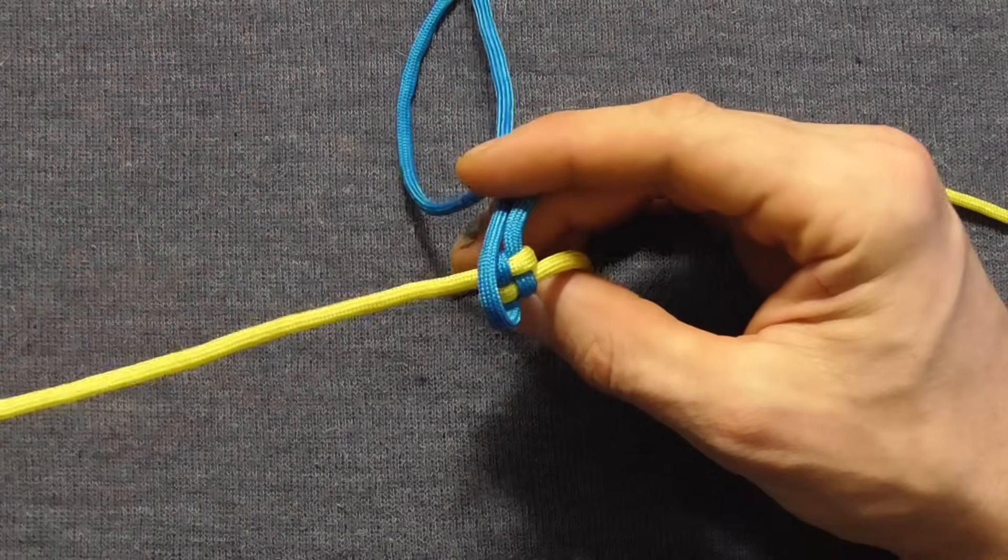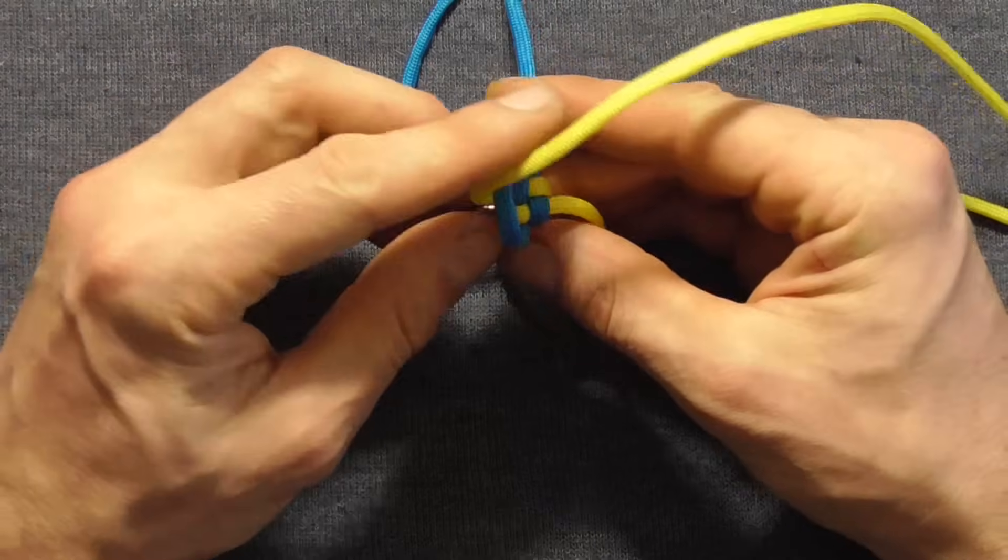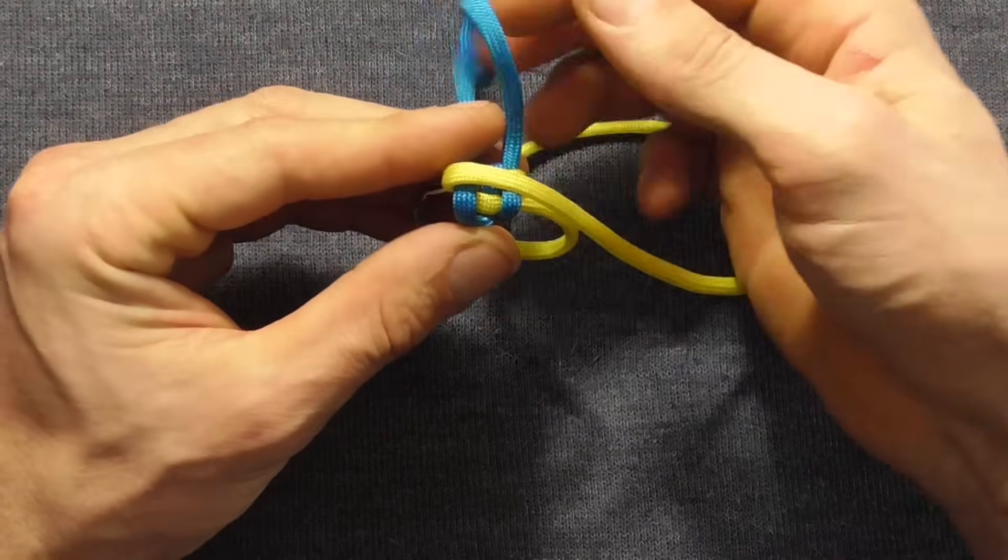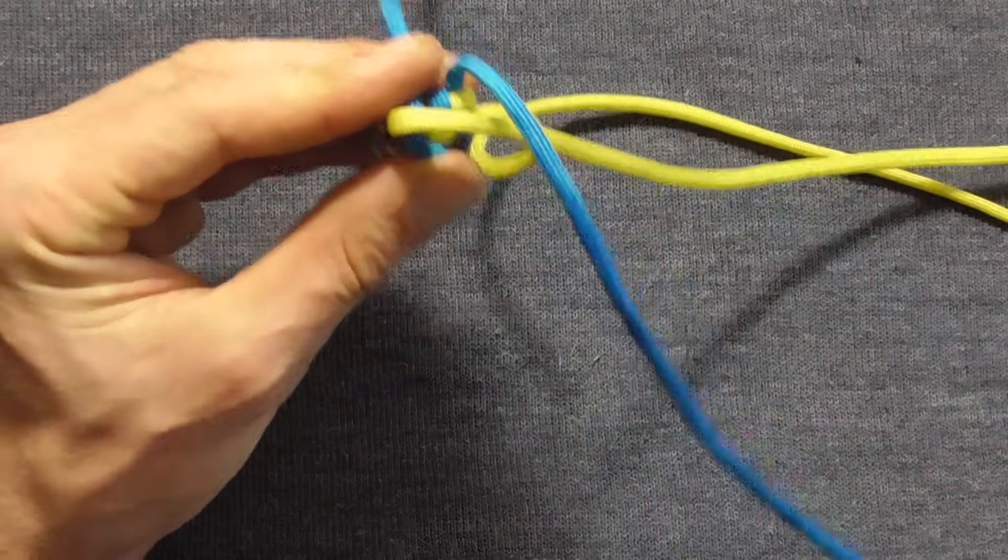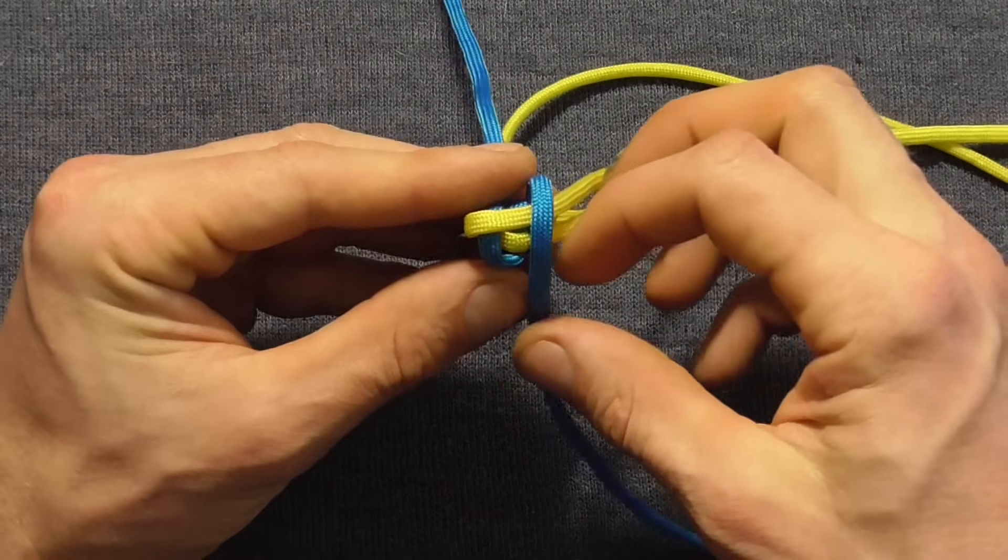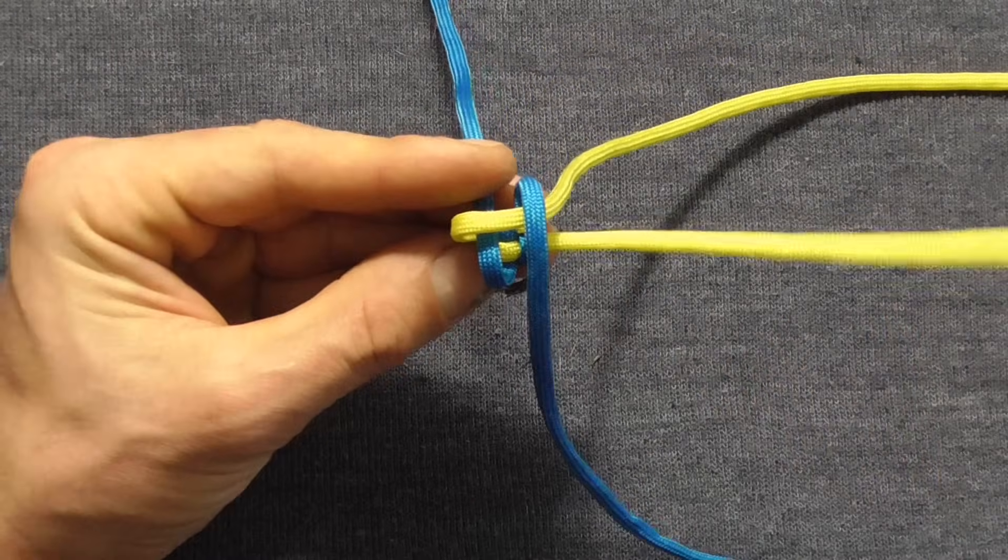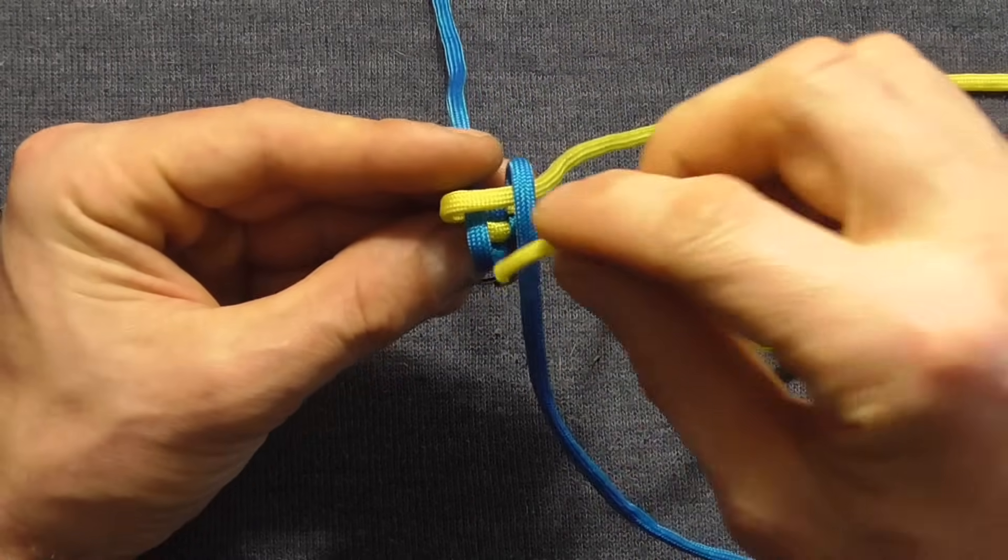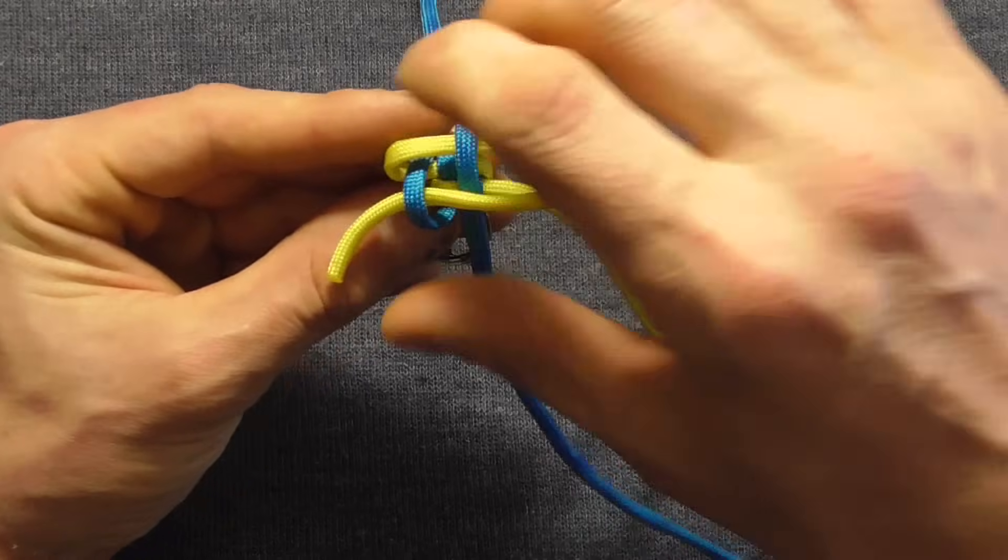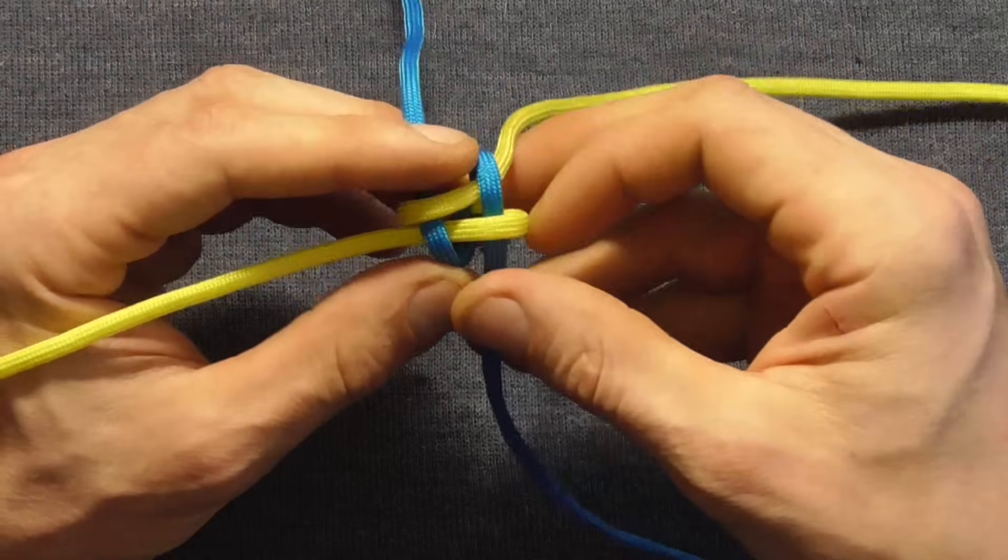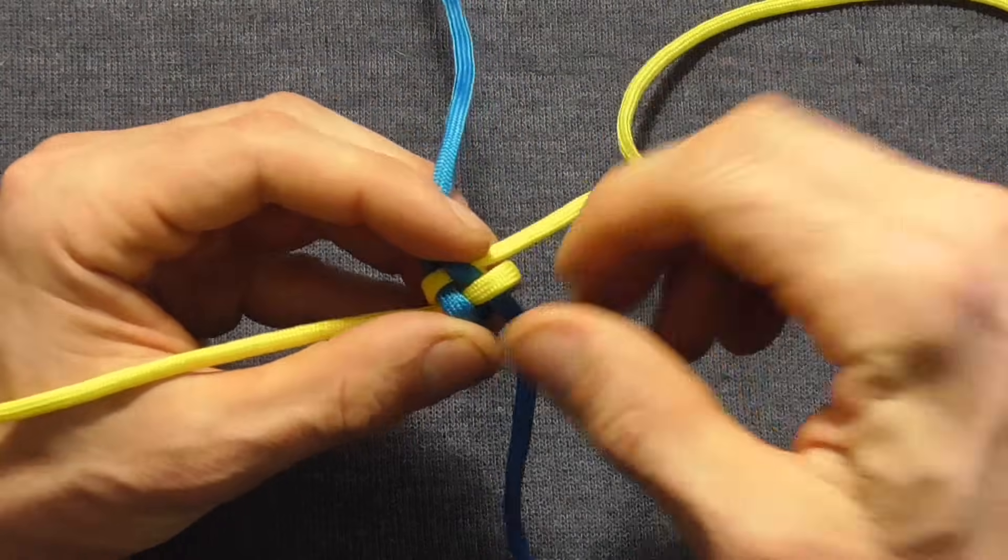Right hand strand across, top strand down, and then this right hand strand over under, and again work the knot tight.